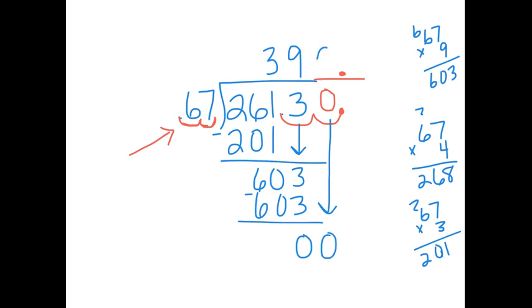67 goes into 0. 0 times multiply. We have nothing left over, so now we're finished. And our quotient is 390. Alrighty, guys. So go ahead and work on those next three problems on your paper.